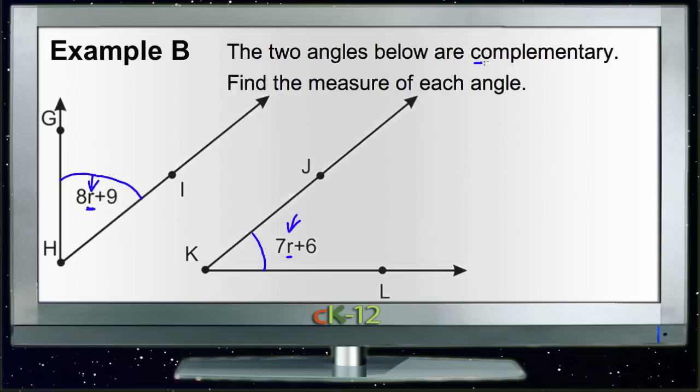However, we do know that the angles are complementary. So the total of the two angles together must be 90 degrees. So if we add the two angles together, 8R plus 9, added to 7R plus 6, that total has to be 90 degrees.